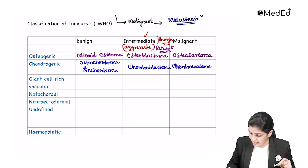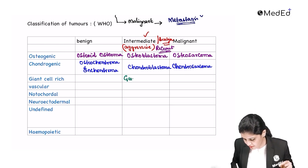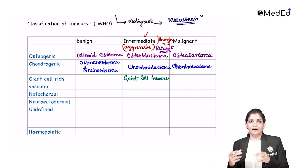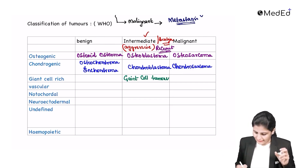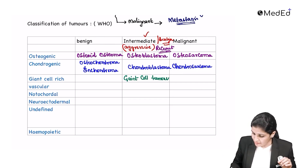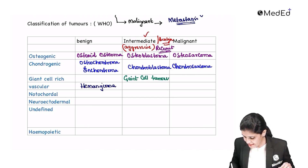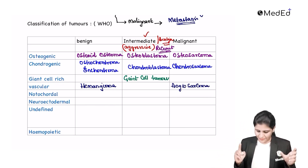Next is the giant cell ridge — there is only one tumor here: the giant cell tumor. Please remember that the giant cell tumor is an aggressive variety — it is benign but aggressive. Then we have vascular tumors: the benign one is hemangioma and the malignant is angiosarcoma. You can recognize the vascular origin from the word 'angio.'